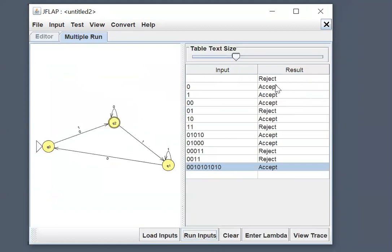So for example, 0 is accepted. Why? If you start at q0, you see a 0, and then you go to q2. Let's see, 01 is not accepted because you start at q0, you see a 0, you go to q2. Then you see a 1, you go to q1. That's not a final state, and you finished your input here. You finished on a non-final state, so you reject.